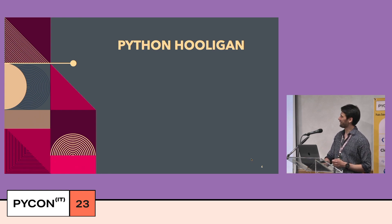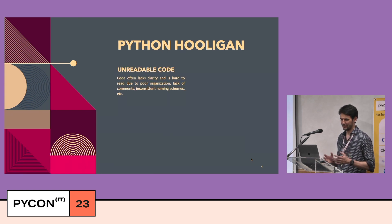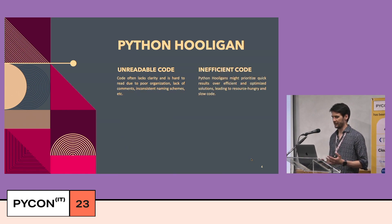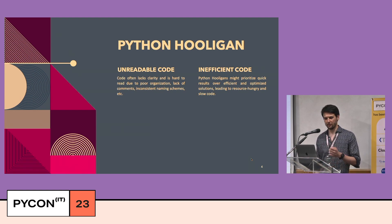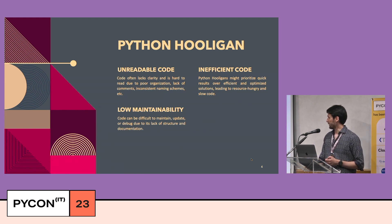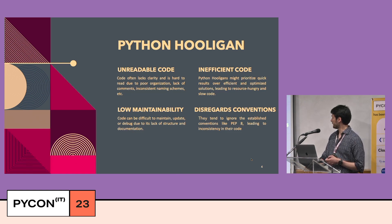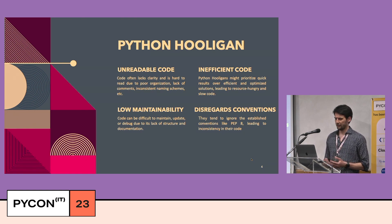Let's define who a Python hooligan is. His code often lacks clarity and is hard to read due to poor organization, lack of comments, and inconsistent naming schemes. Another thing is inefficient code — Python hooligans might prioritize results over efficient, optimized solutions, leading to resource-hungry, slow code. There's also low maintainability: code can be difficult to maintain, update, or debug. And he disregards conventions, tending to ignore established conventions like PEP8, leading to inconsistency.